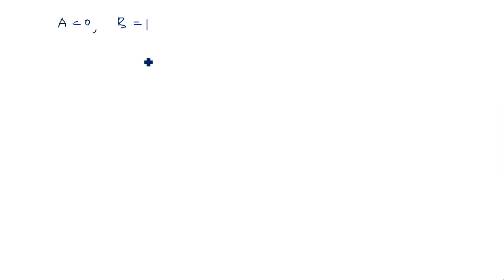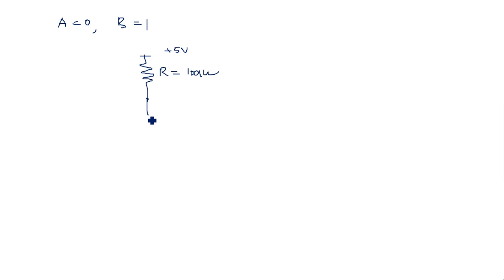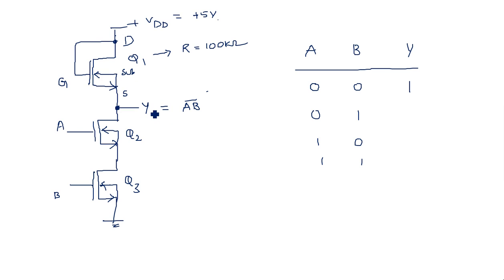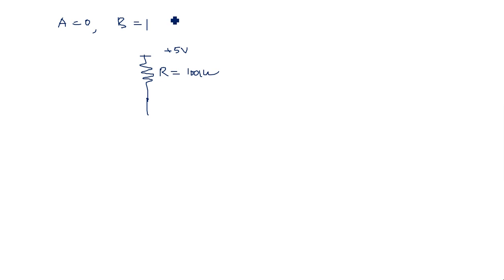Now for the condition A equals 0, B equals 1: the pull-up transistor Q1 has 100 kilo ohms and plus 5 volts. In the pull-down network, A equals 0 means Q2 is in the OFF state, while B equals 1 means Q3 is in the ON state.